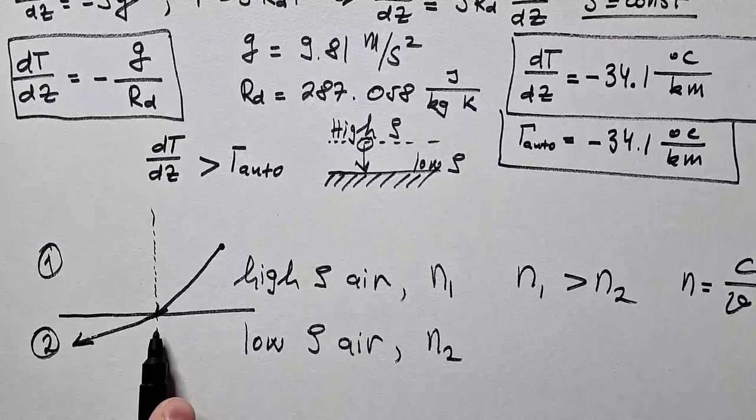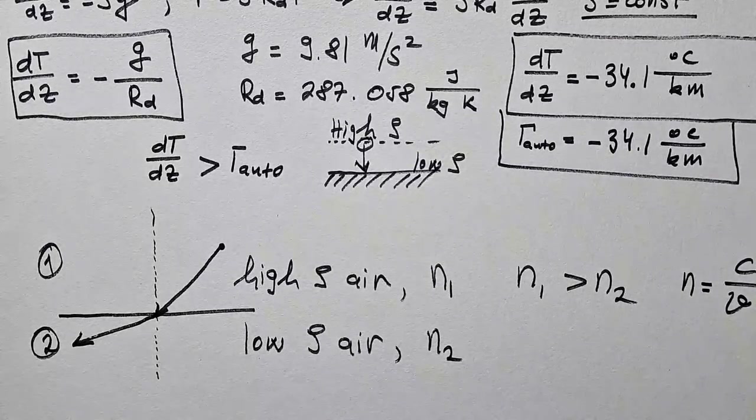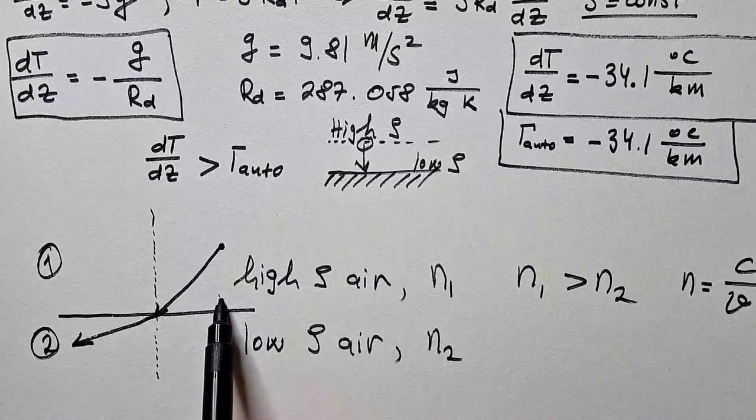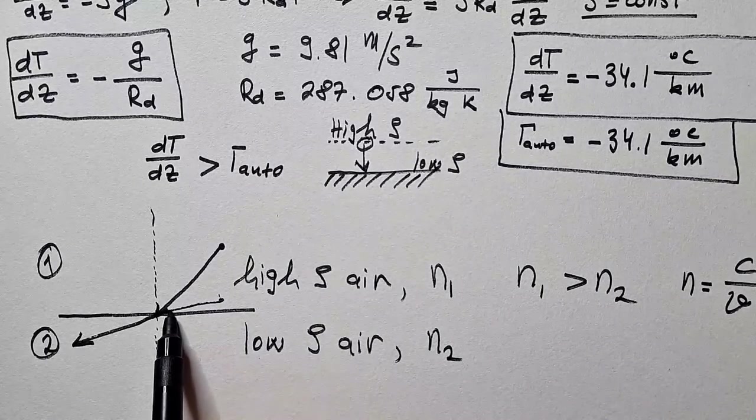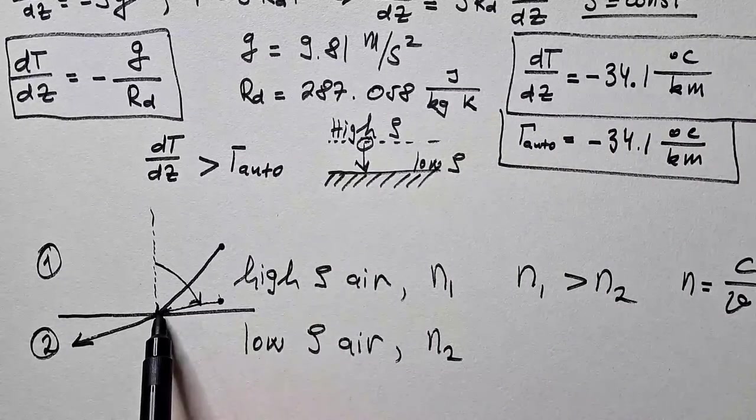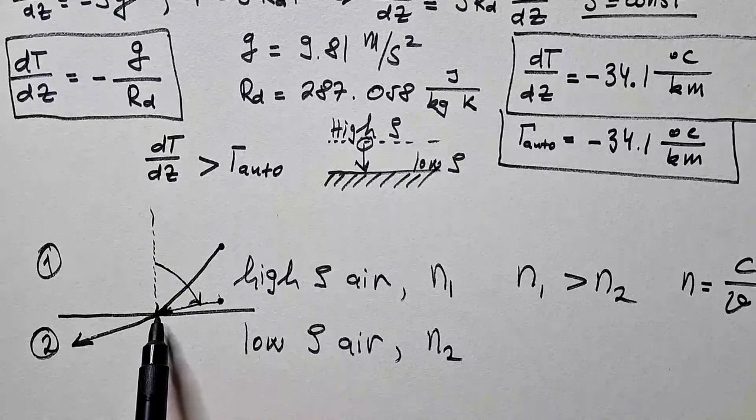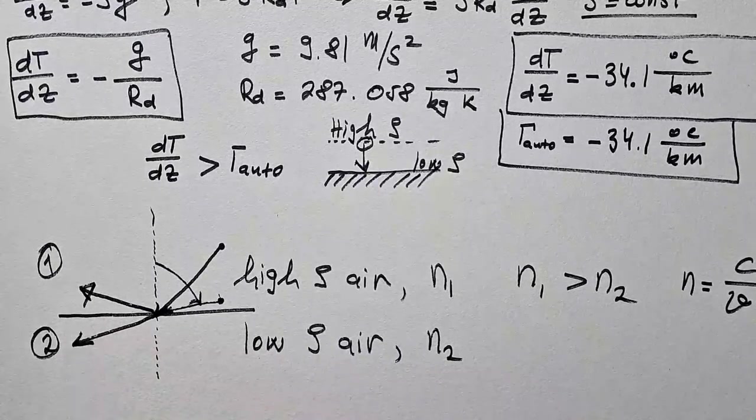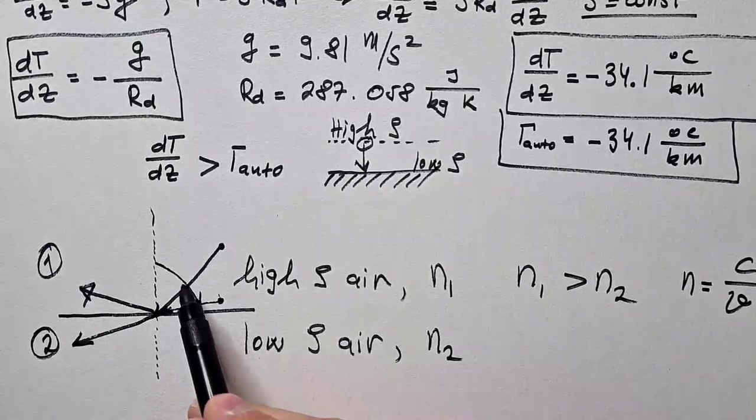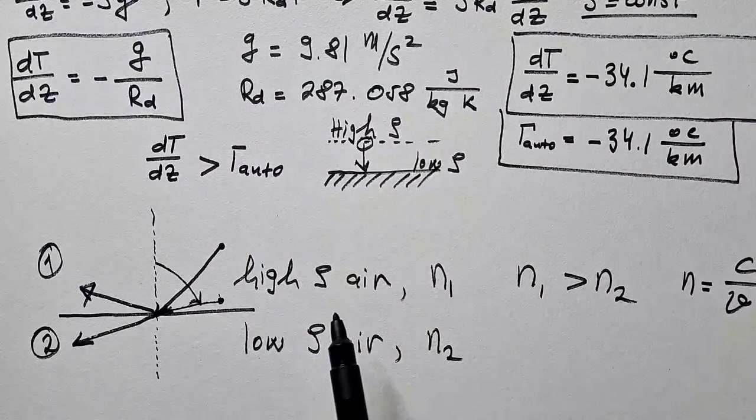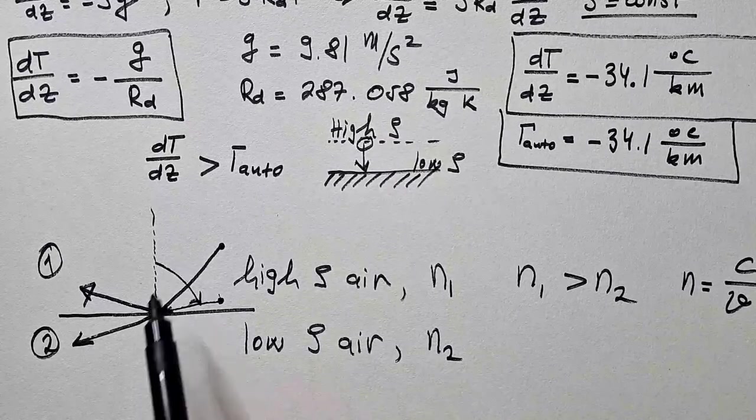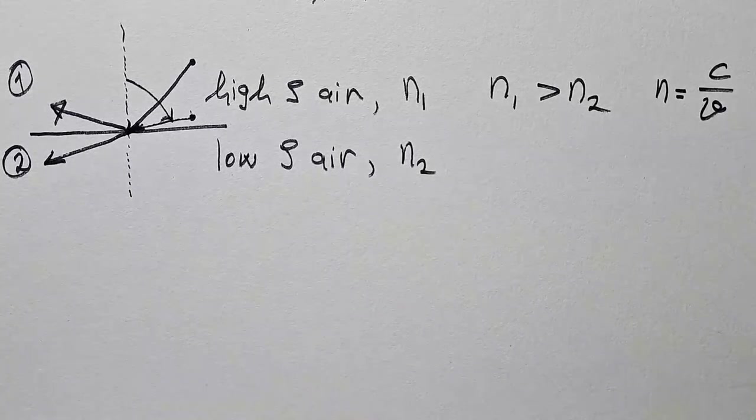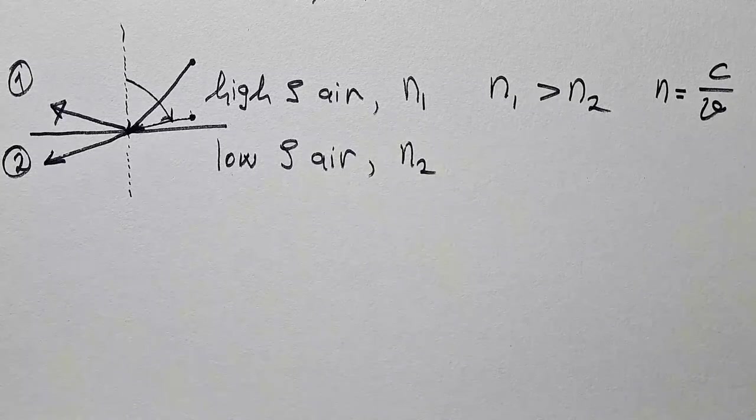One more thing related to this business that we need to understand before I explain mirage is the following. If I have the same situation as here, but let's say the incidence angle of light is large, then the light cannot be refracted, but it has to be reflected, like so. And there is a critical angle for which this will happen, and that angle depends on N1 and N2 for these two mediums.